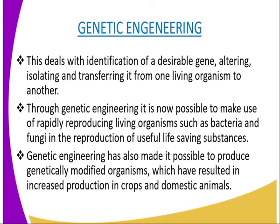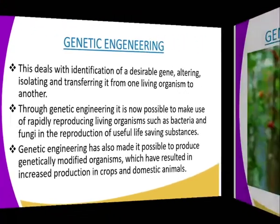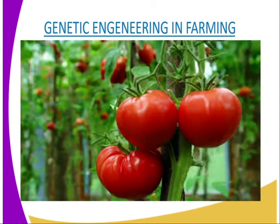These substances include hormones like insulin, somatotrophin, antibiotics, interferons, vaccines and vitamins. Genetic engineering has made it possible to produce genetically modified organisms, known as GMOs, which have resulted in increased production in crops and domestic animals. Genetic engineering has been applied in several fields, including farming and medicine. So let us now look at genetic engineering in farming.